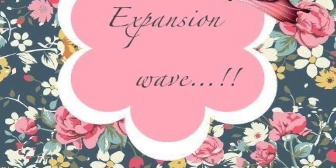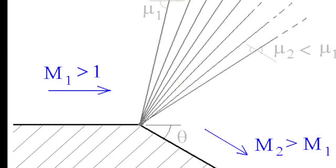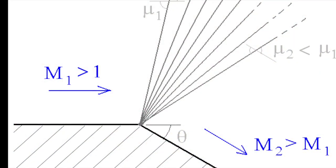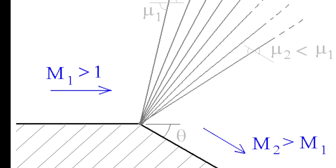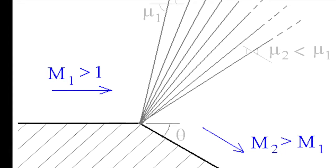Expansion Wave: When supersonic flow is turned away from itself, an expansion wave is formed. Here, the surface is deflected downward away from the main bulk of flow above the surface.